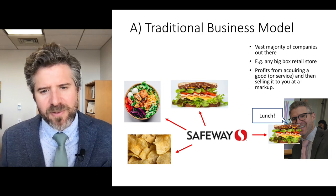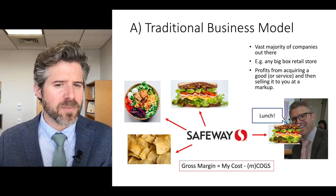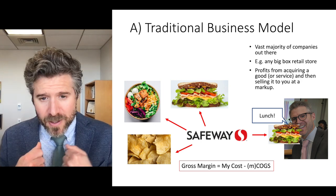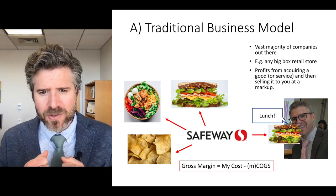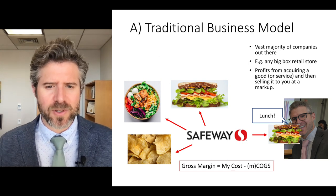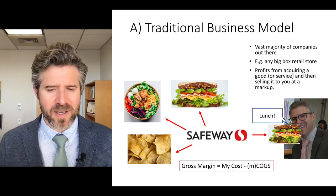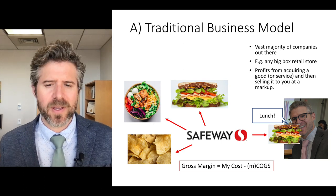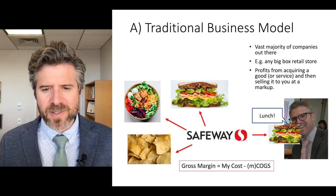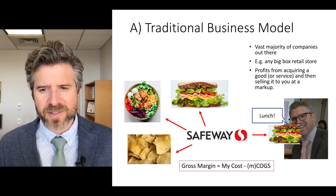We can see the formula at the bottom. It's generally represented as: gross margin on this transaction equals my cost for buying lunch minus Safeway's marginal cost of goods sold. With that gross margin, Safeway can hopefully turn a profit after accounting for the marginal cost of labor, overhead, and all of that.